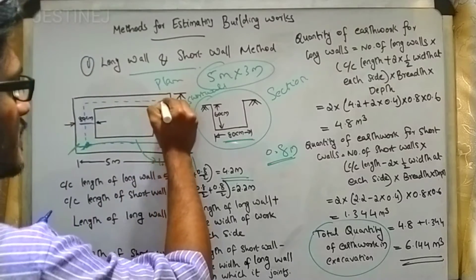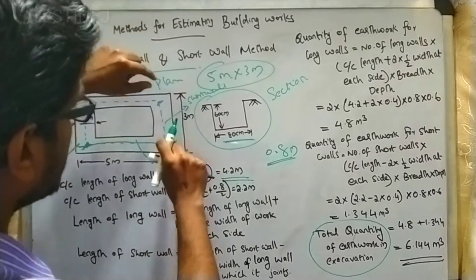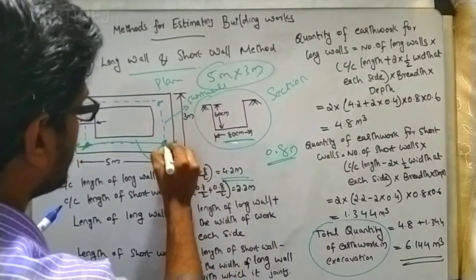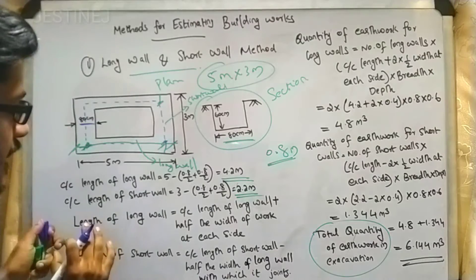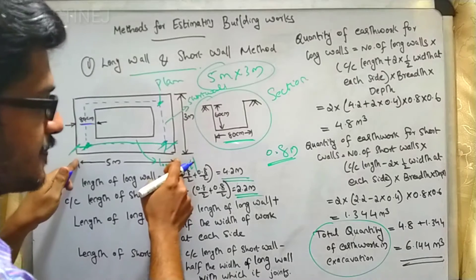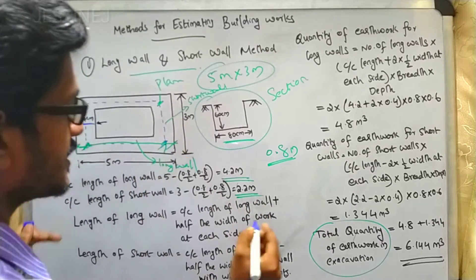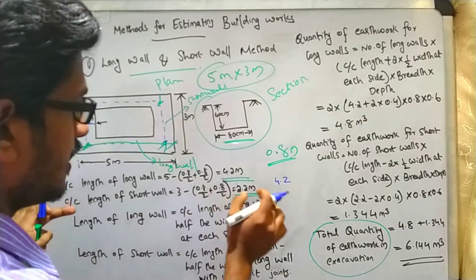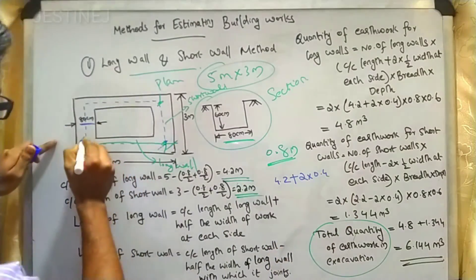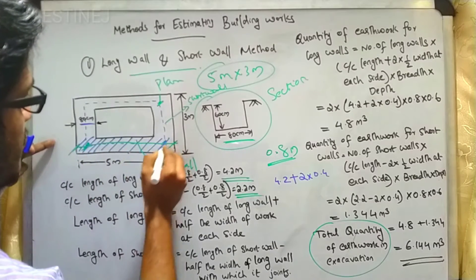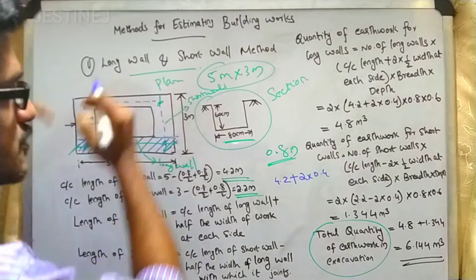Similarly, the center-to-center distance for the length of the short wall is 3 meter minus 0.4 meter on each side, giving 2.2 meter. The length of the long wall is 5 meter, calculated as the center-to-center distance of 4.2 plus 2 multiplied by 0.4. This accounts for the half-width extensions on both sides. The total number of long walls is 2.